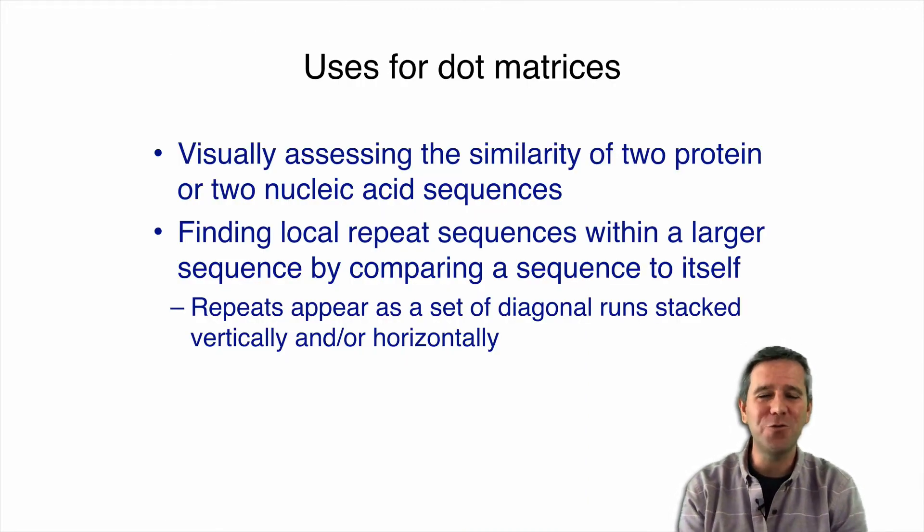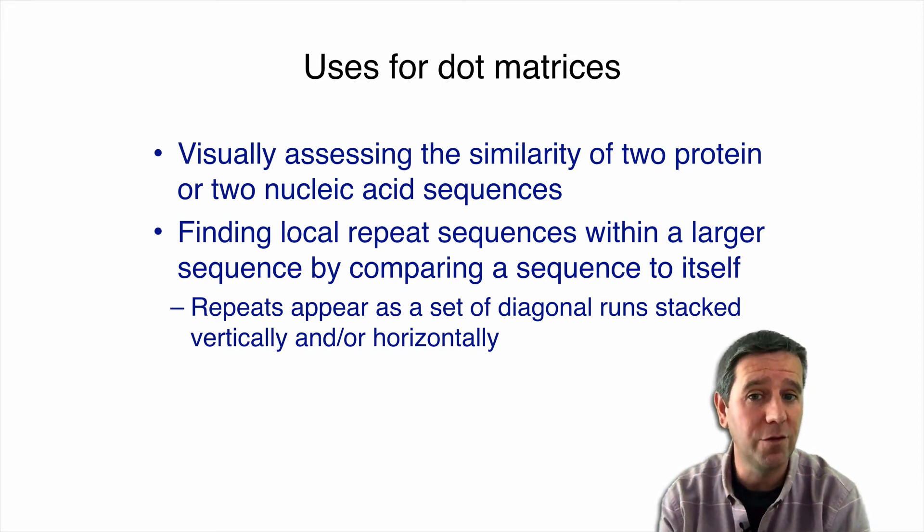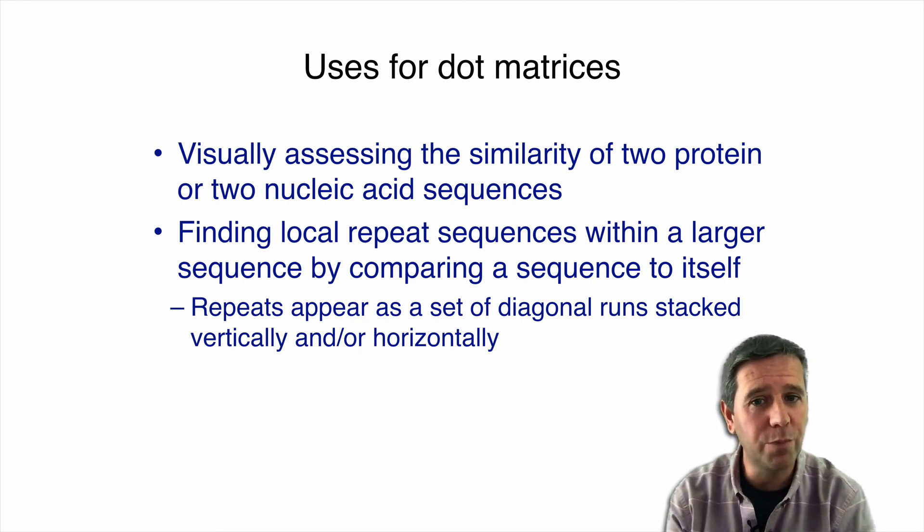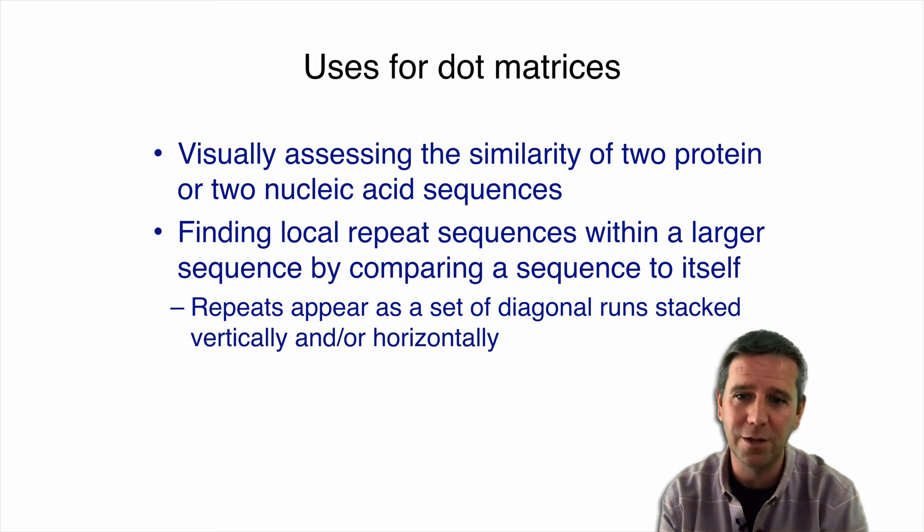Okay. So what do we use these kind of dot plots for? Well, we use them mainly for visually assessing the similarity to protein or nucleic acid sequences. And more frequently, we use them for finding local repeat sequences within larger sequences by comparing a sequence to itself. So in that case, repeats, what they will appear as will be diagonal runs stacked vertically or horizontally off the diagonal, the main diagonal. Let me show you an example of this here.